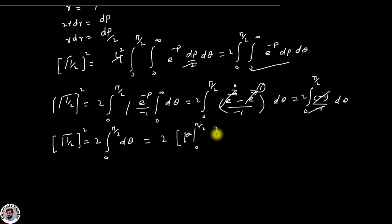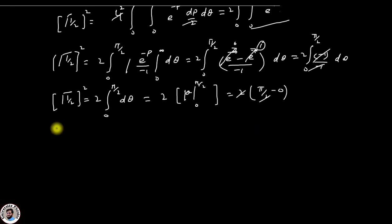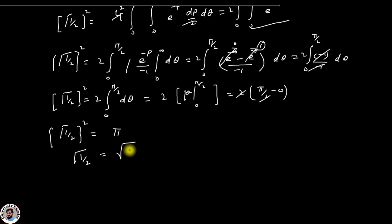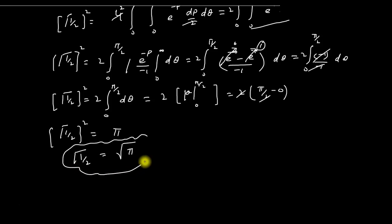The 2 and the 2 cancel, and we finally get gamma(1/2) squared equals pi. Taking the square root gives gamma(1/2) equals the square root of pi. This is the required proof which shows that gamma(1/2) equals square root of pi. Thank you.